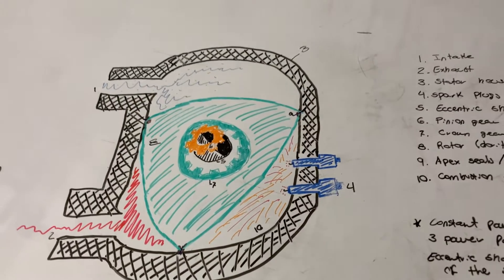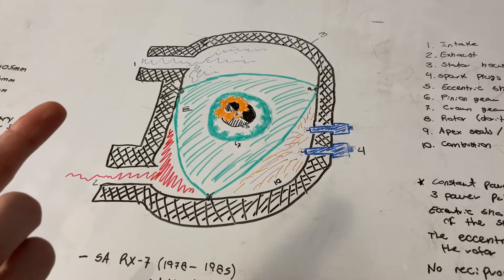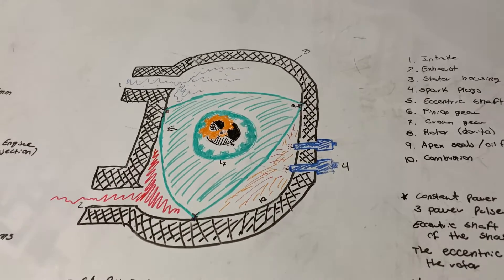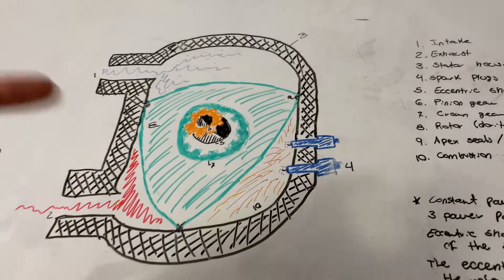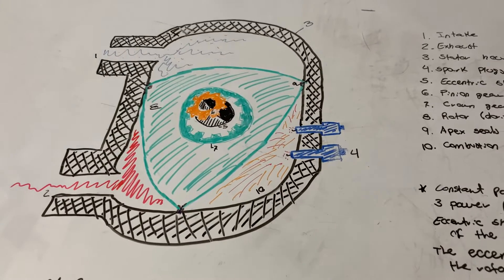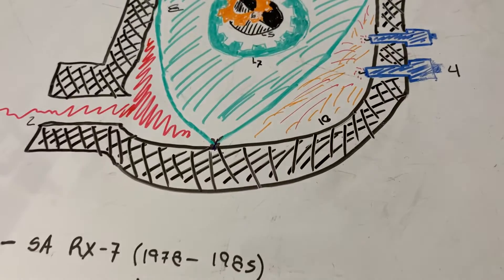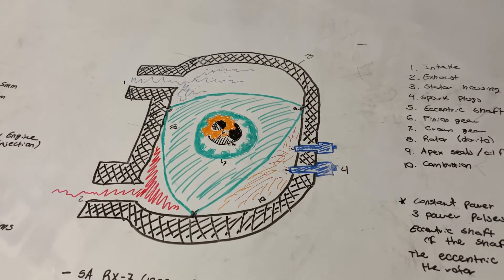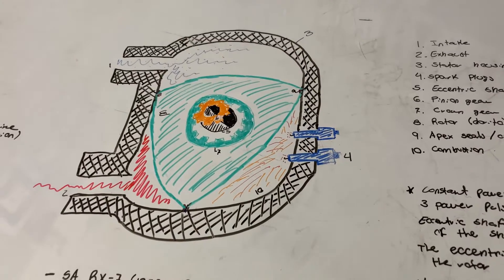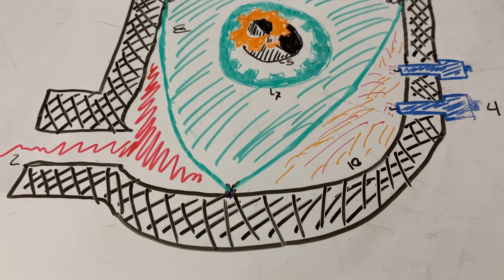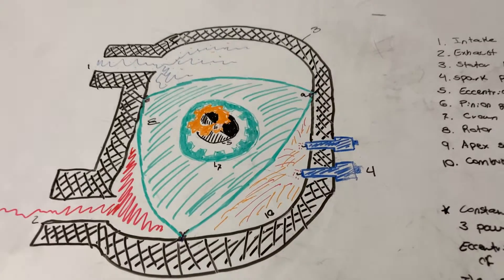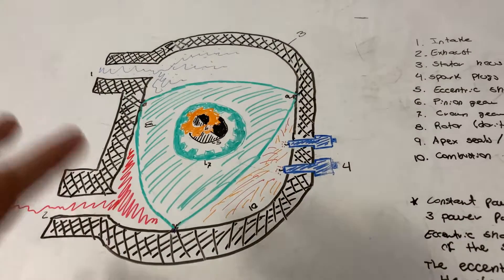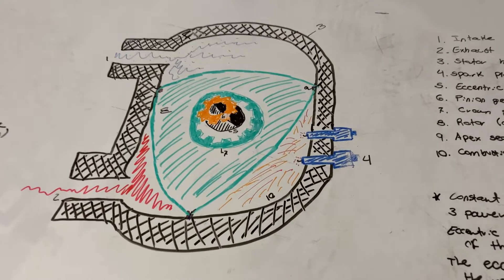Many downsides to the rotary design: not just that you have to constantly be taking care of it, but like every 50,000 miles you've got to open this up, take the rotor out, and replace your apex seals. They do burn a lot of oil — as you can see that film there, this engine by design burns oil. Some Mazda rotary engines have their own separate supply of oil for the apex seals, so there's an entirely different reservoir of oil for the apex seals and a different reservoir for the rest of the engine's oil.